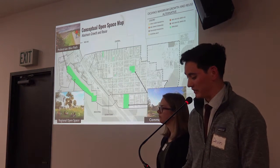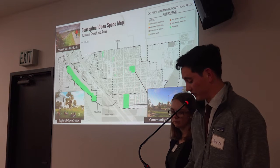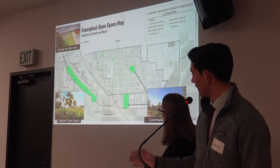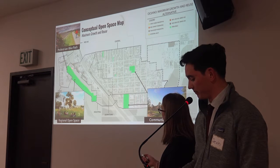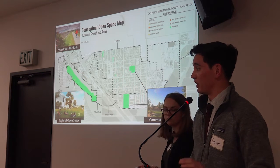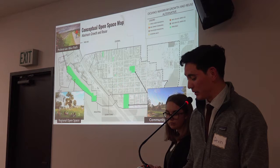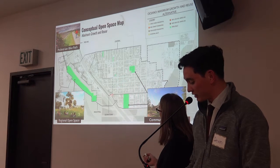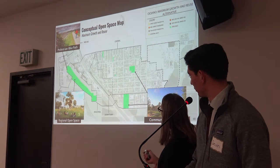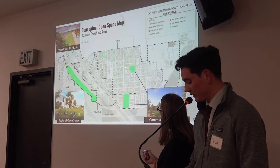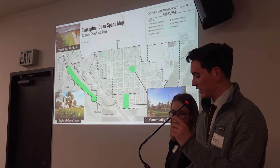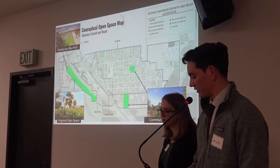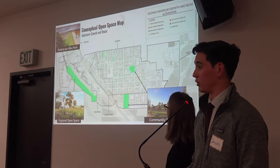Open space is a major feature of this alternative. It introduces a new regional open space in the airport area that can be utilized by residents beyond Oceano. Neighborhood open spaces within the southern and central neighborhoods could be created as well, connected by a number of complete streets and pedestrian trails accessible to the community as a whole.